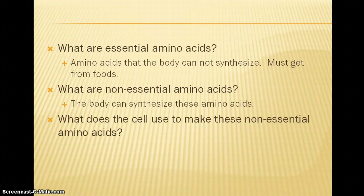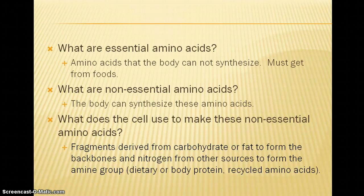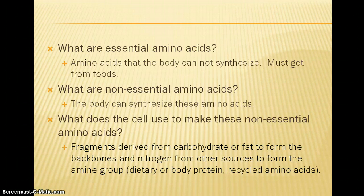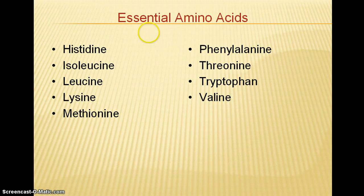What does the cell use to make non-essential amino acids? The body can use fragments of carbohydrate and fat, which provide the carbon, hydrogen, and oxygen that are part of the protein structure. But we still need a nitrogen source, and nitrogen doesn't come from carbohydrate or fat. That nitrogen has to come from dietary protein, body protein being broken down, or recycled amino acids. We have about 20 amino acids used to build body proteins, and about nine of these are essential. The essential amino acids are listed in this slide — you don't need to memorize them, it's just to give you an idea of that list.